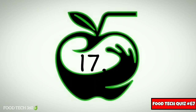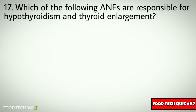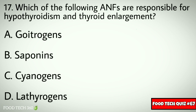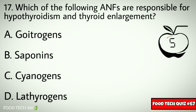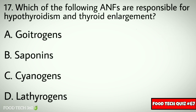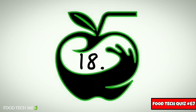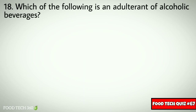Question number seventeen: which of the following anti-nutritional factors are responsible for hypothyroidism and thyroid enlargement? Options: A) goitrogens, B) saponins, C) cyanogens, D) lathyrogens. Correct answer: A) goitrogens.